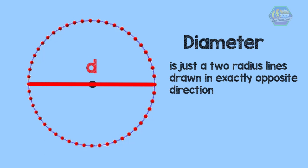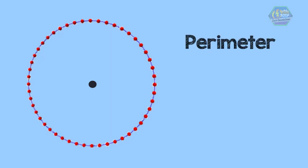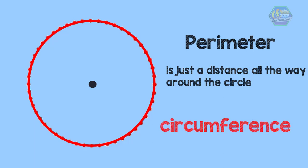Remember that all the equidistant points we drew, if we combine them, will form the perimeter of the circle. So what is the perimeter? The perimeter is just the distance all the way around the circle. The perimeter of a circle has a special name — it is called the circumference.